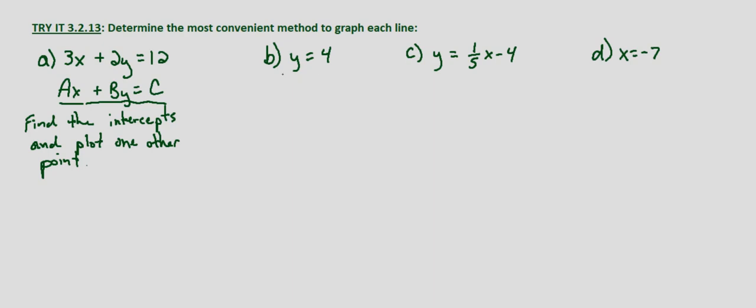Part b we're given y equals 4. Well remember any time we have y equals b where b is any real number, that means it's a horizontal line. So the most convenient way to graph this is just to recognize y equals 4, we would go to y equals 4, 1, 2, 3, 4 and we'd graph a line there. That's the most convenient way to graph that.